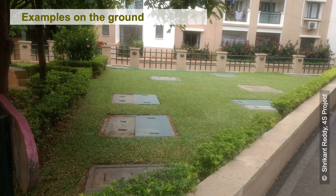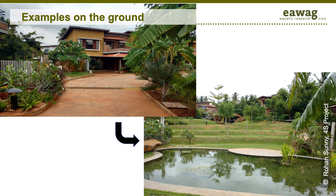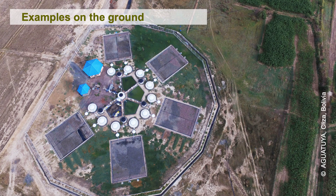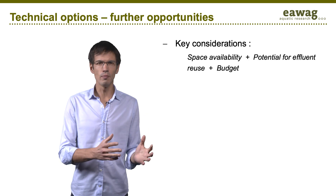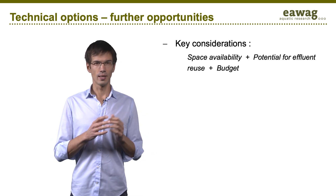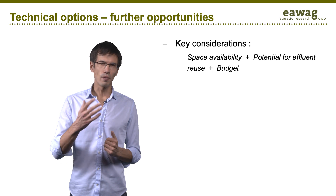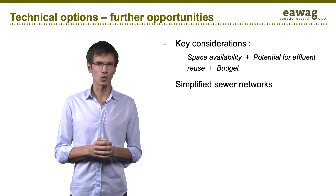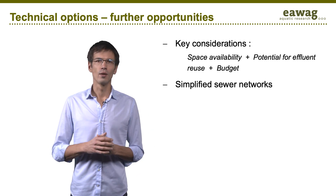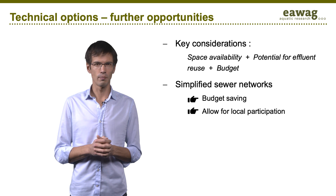As you can see, these systems can be very well integrated into the local landscape. Here is a beautiful example of a decentralized wastewater treatment plant serving a peri-urban neighborhood of Cochabamba in Bolivia, which provides treated effluent for the neighboring farmers. The choice of a system will depend on factors like space availability, potential for effluent reuse, and budget. If you plan to connect several buildings or a neighborhood, it is often possible to build simplified sewer networks — also called condominial — which save money and allow for local participation.